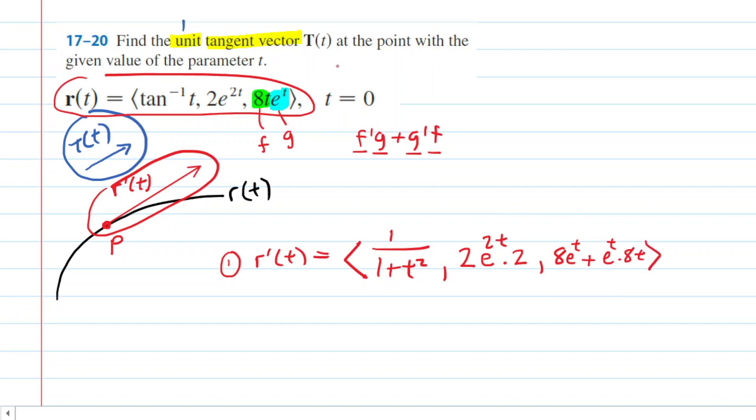So there is our r prime of t, and we know from the question that t is equal to 0. So we're just going to be plugging in 0 for all the little t's. So for the x component, we're going to have 1 over 1 plus 0 squared. And of course, if we simplify that, we'll get 1 over 1, which is just equal to 1. So that is our x component for the tangent vector.